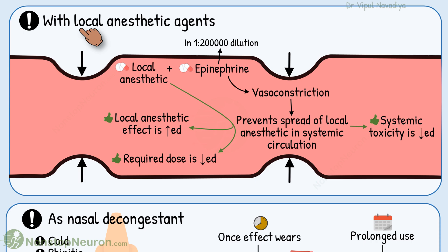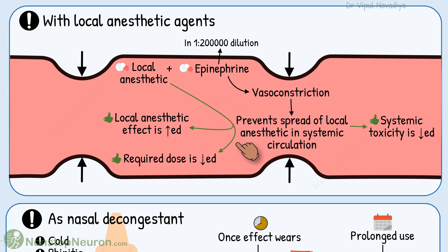Next, use with local anesthetic agents. Epinephrine is added with local anesthetics for several benefits. Local vasoconstriction produced by epinephrine prevents the spread of the anesthetic into the systemic circulation, so the anesthetic agent stays local, which increases its effect and also decreases the required dose of anesthetic. Systemic toxicity is also decreased. For this purpose, epinephrine is used in 1 in 200,000 dilution.